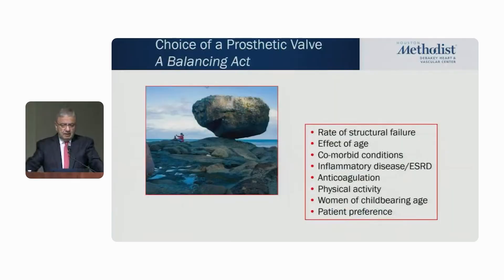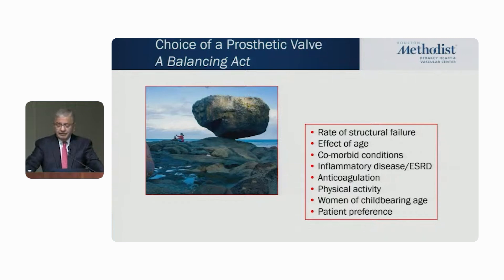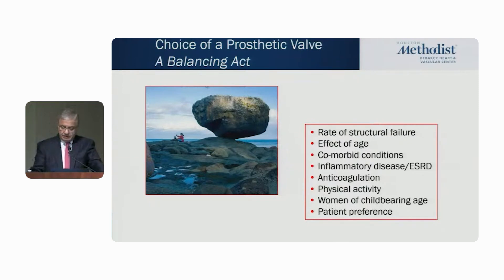The choice of a prosthesis is indeed a balancing act. We're not going to go through this today because I wanted to be much more focused on imaging, but you have to incorporate the rate of structural failure, effective age, other comorbidities, longevity of bioprosthetic valves, inflammatory disease, end-stage renal disease, and the need for anticoagulation — still required in the form of traditional warfarin.